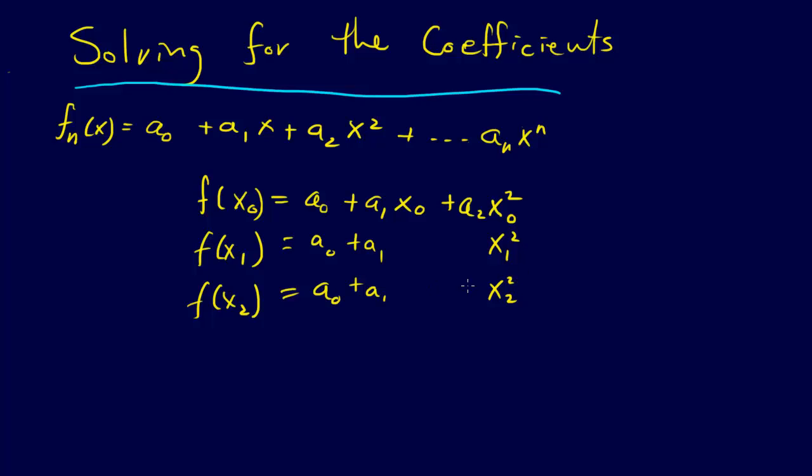x_0 squared, and we're going to have x_1 squared, and we're going to have x_2 squared. a_2, a_2, x_1, x_2, all right? So here's our system of equations, and that's actually just a fully determined system.